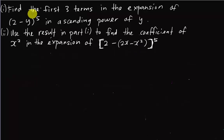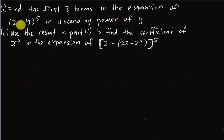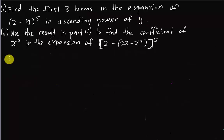So first, part 1 is very simple. If you know about the binomial theorem, it asks you to find the first 3 terms in the expansion of (2 - y)^5 in ascending power of y, meaning the power of y becomes bigger and bigger — power 1, power 2, power 3, and so on. I'm going to solve number 1 first.